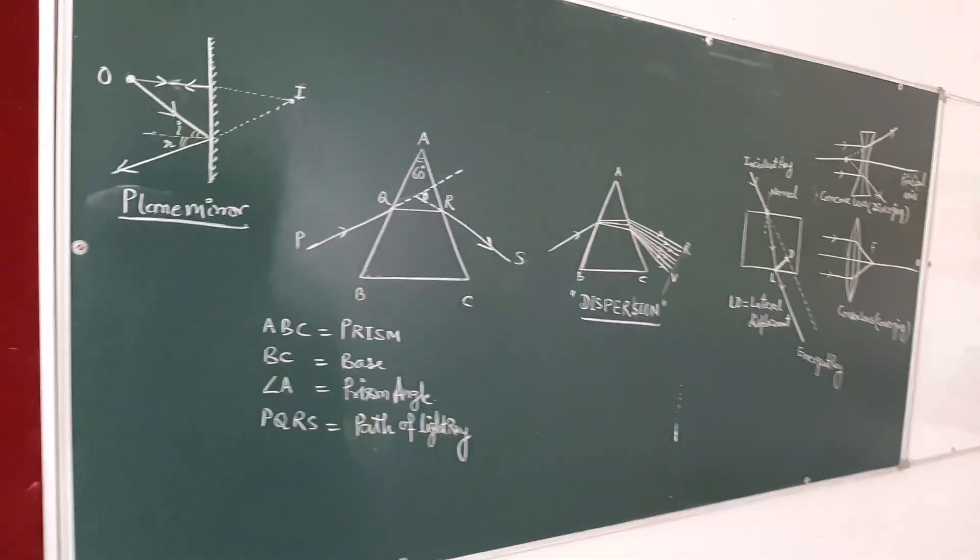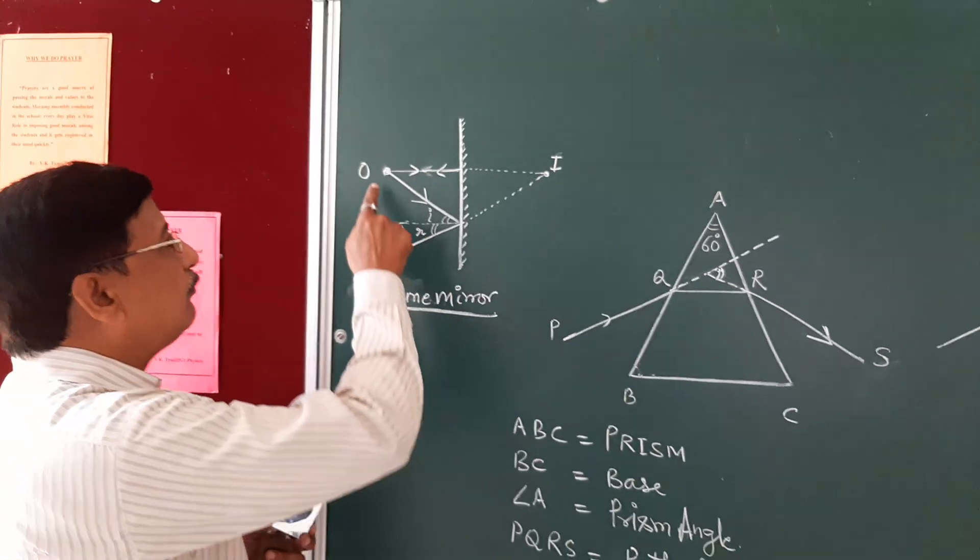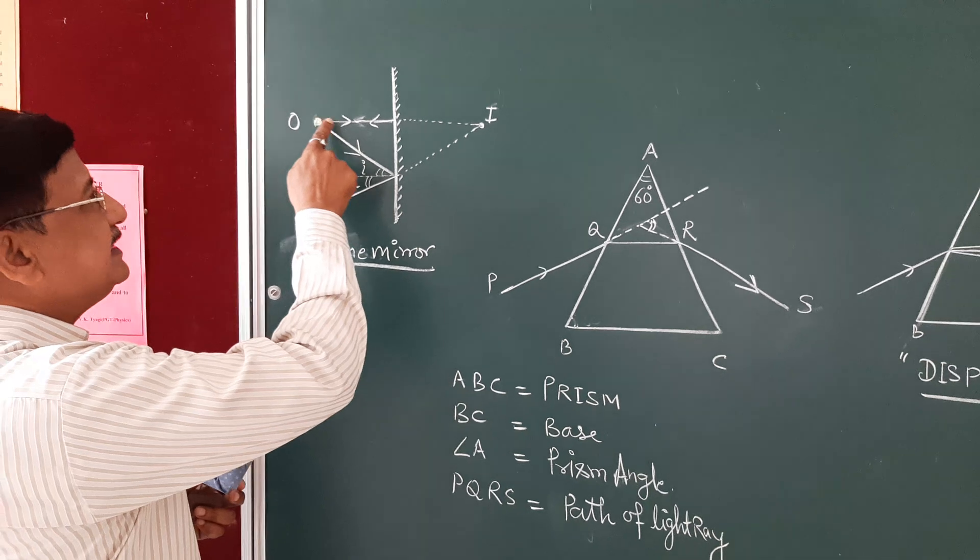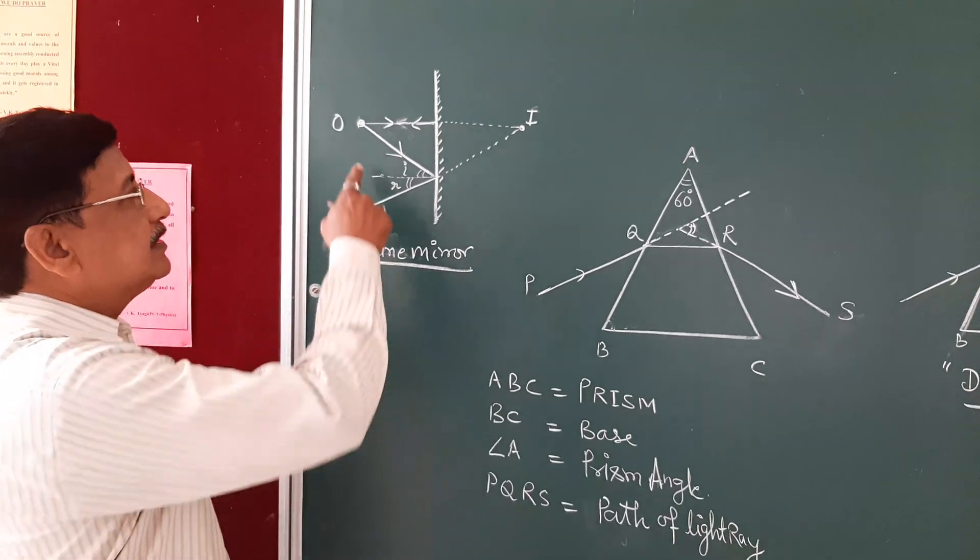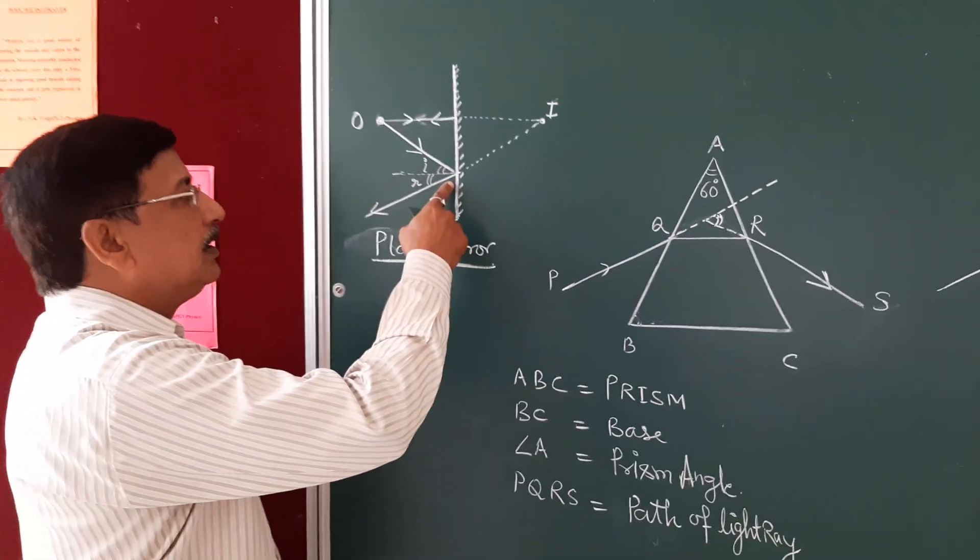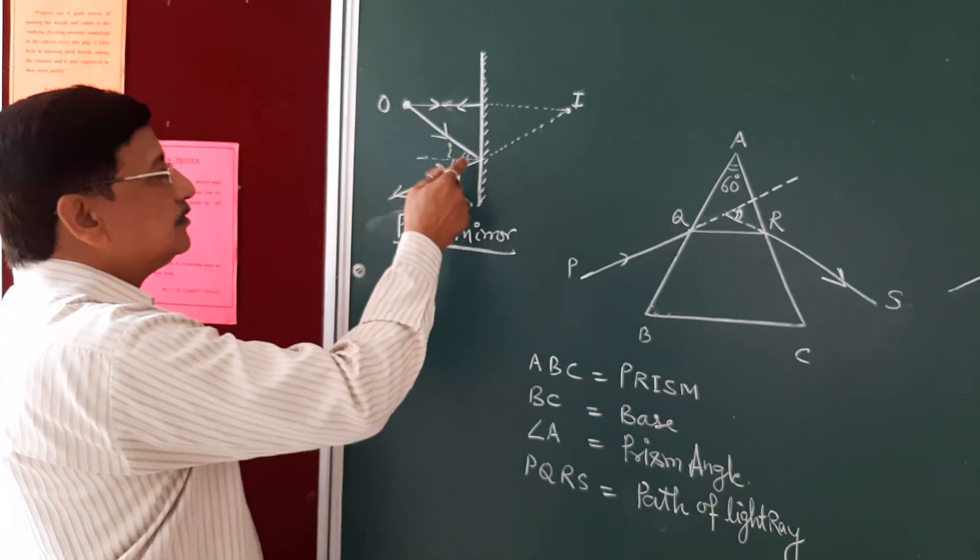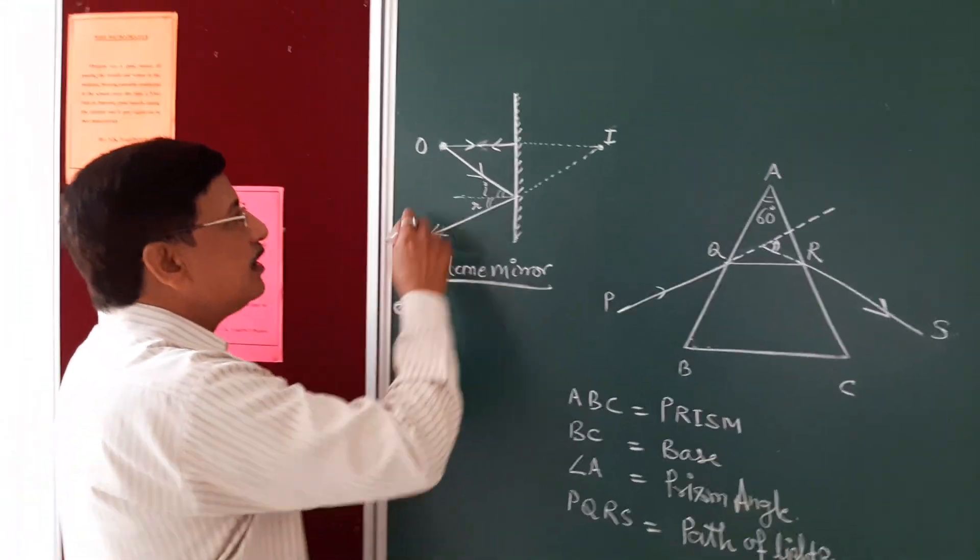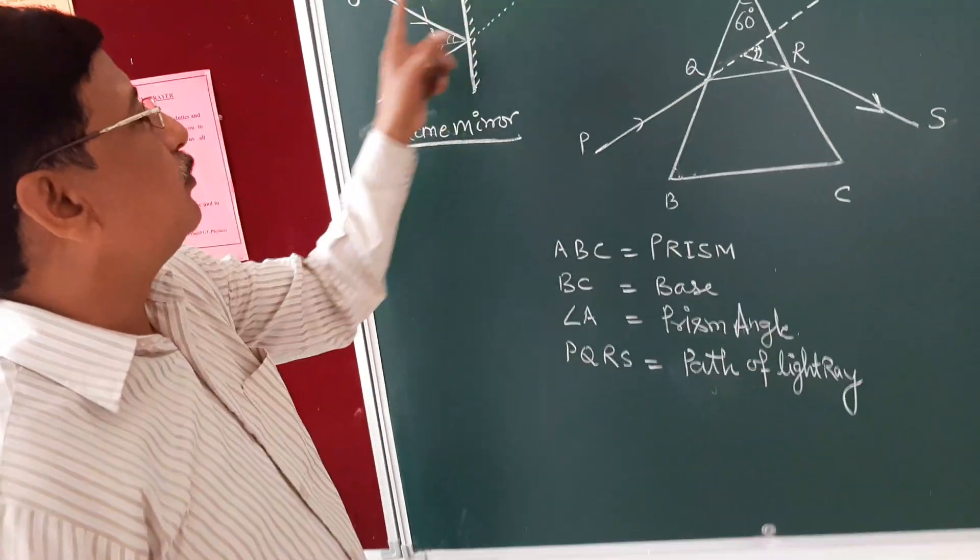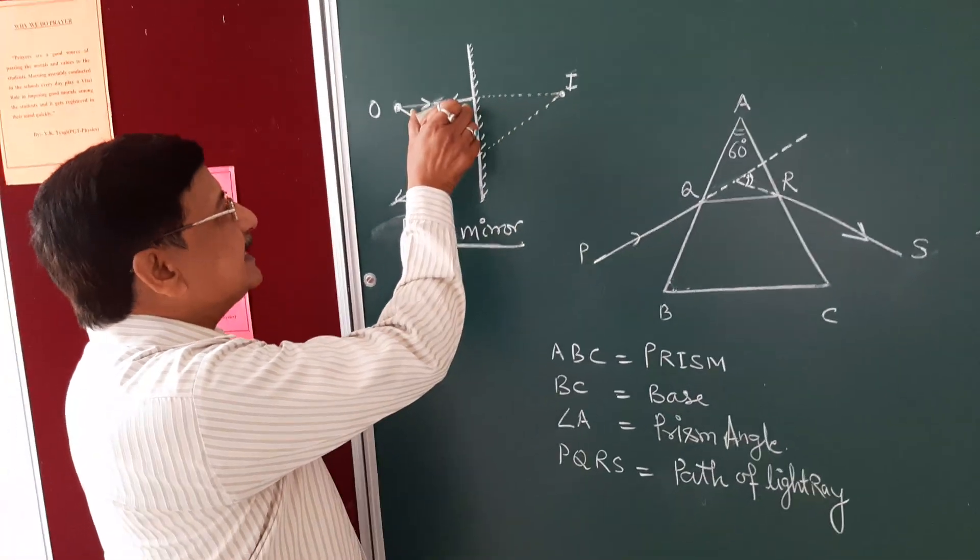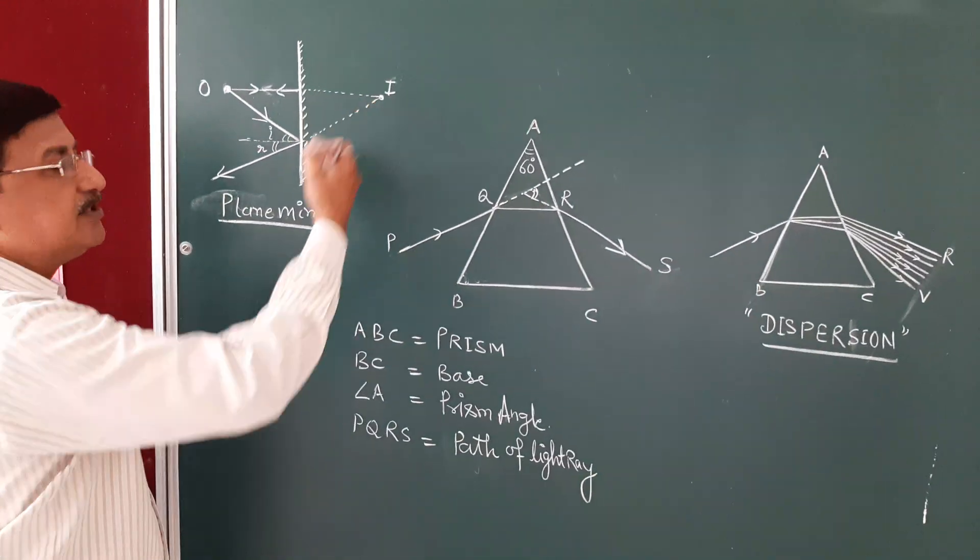First is plane mirror. This is plane mirror and it forms the image of object. This is object and this is image. One ray is incident perpendicular to the mirror and bounces back by same path. Another ray is incident obliquely and reflected by this path. Both reflected rays are diverging. So when extended backward, they seem to meet at I. So it forms the image of object at same distance as object is placed in front of the mirror.